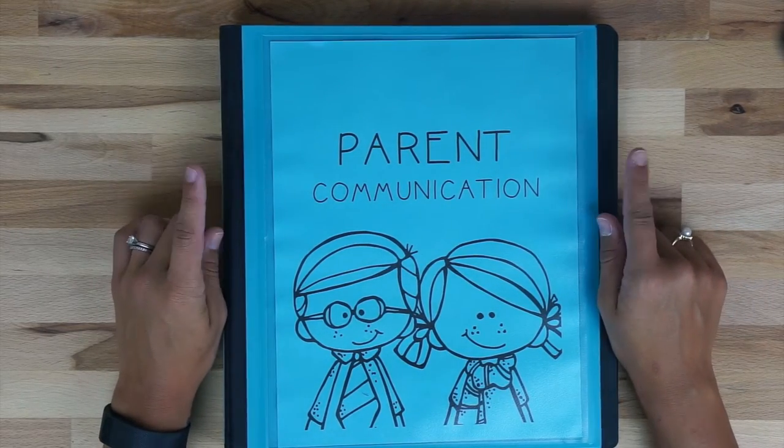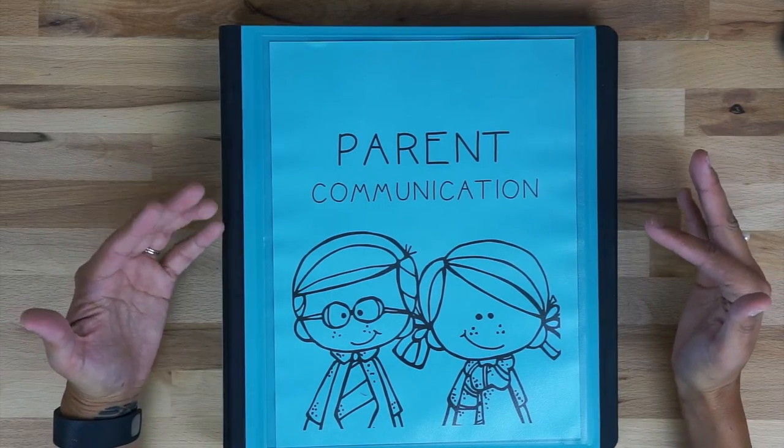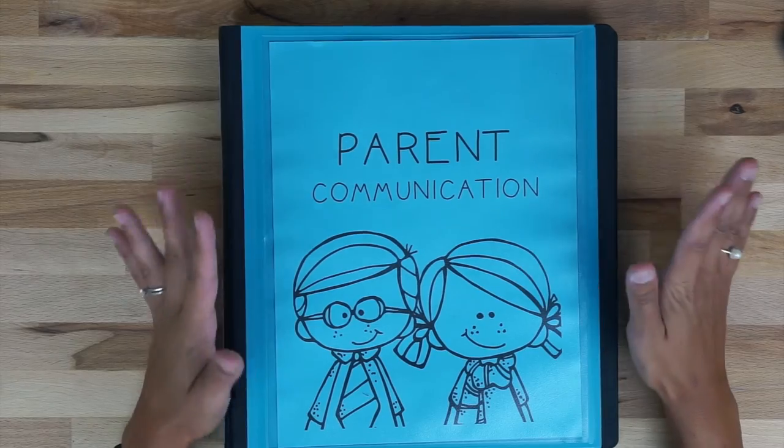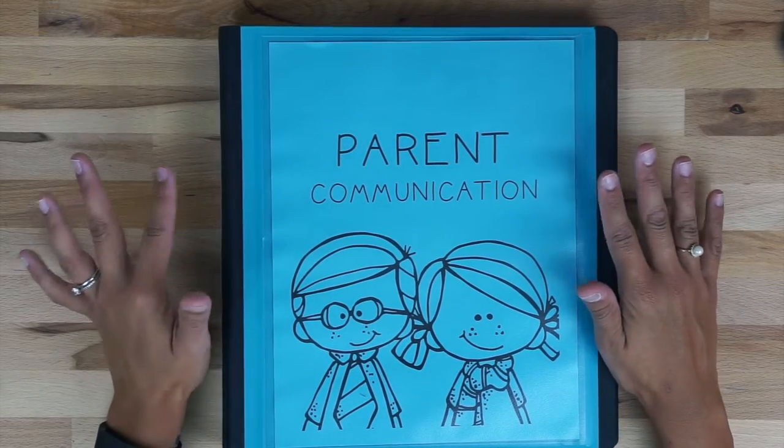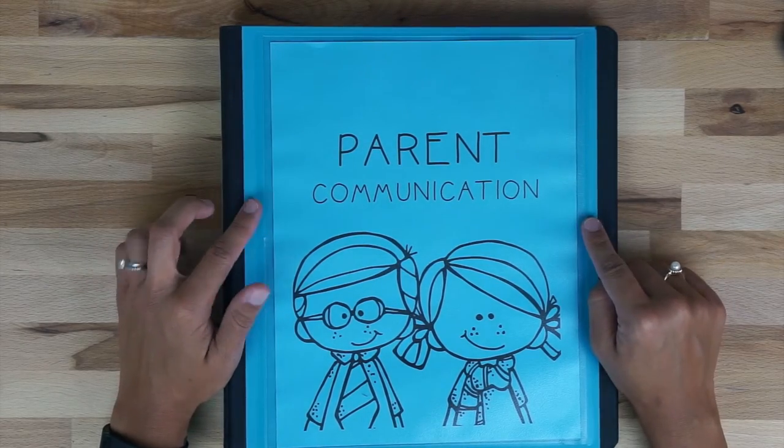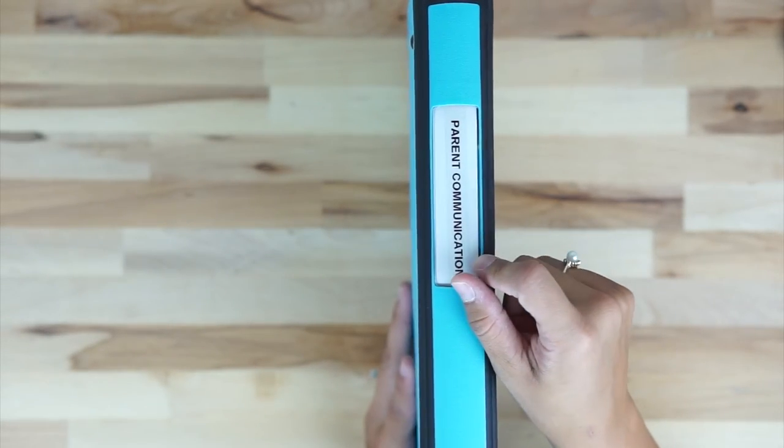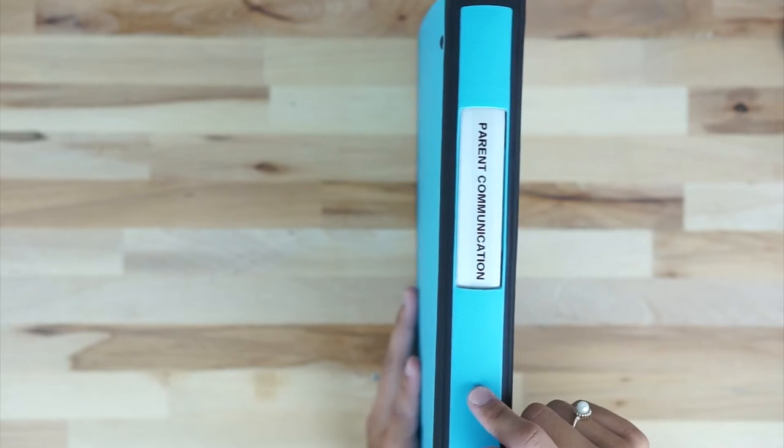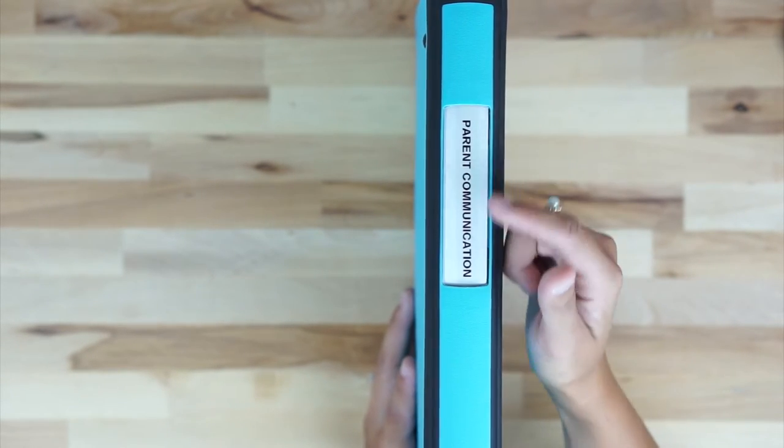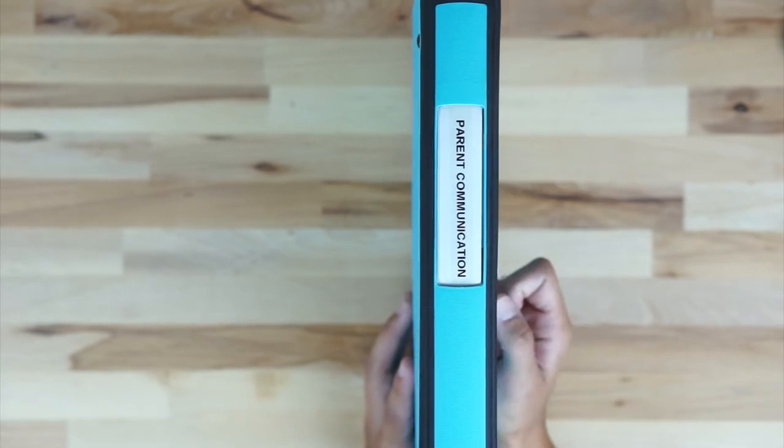So for behind my table I like to use all of the same color. I enjoy having things that look aesthetically pleasing so I want to keep all of my resources that I use throughout the day throughout the week the same color. So it's all going to be this really light blue color and on the side this is a Staples brand and I kept the white label and all I did was just print out parent communication with my Dymo label printer and put that right on there.